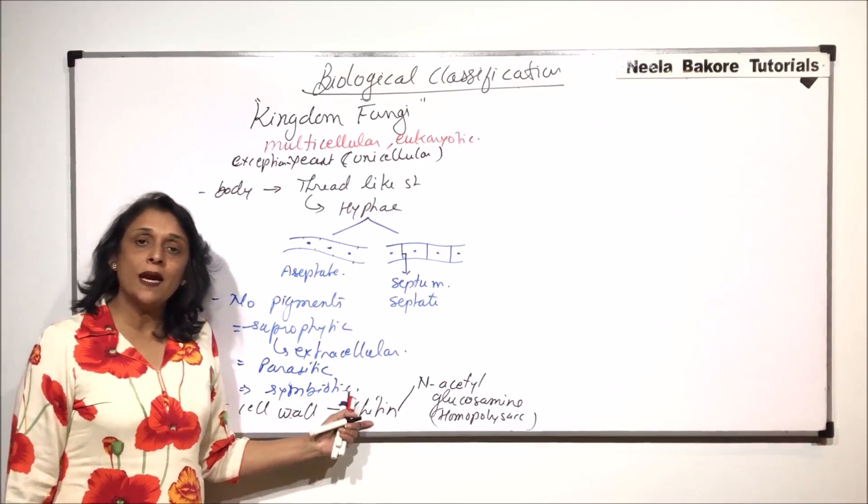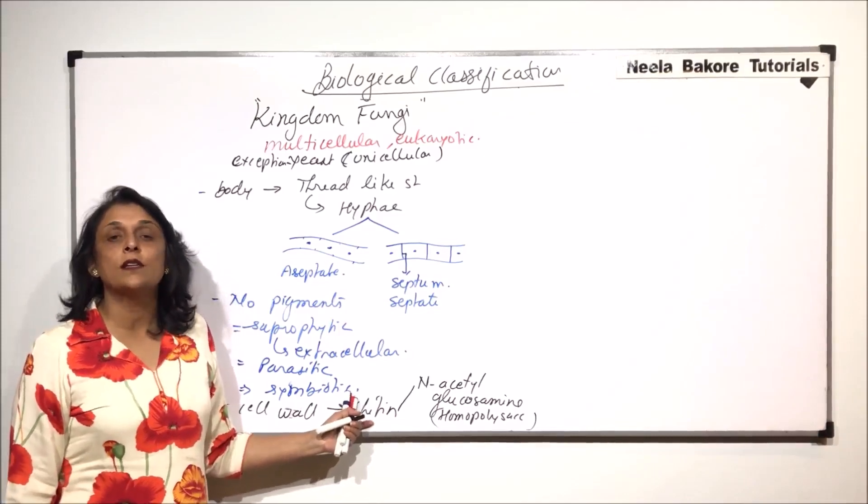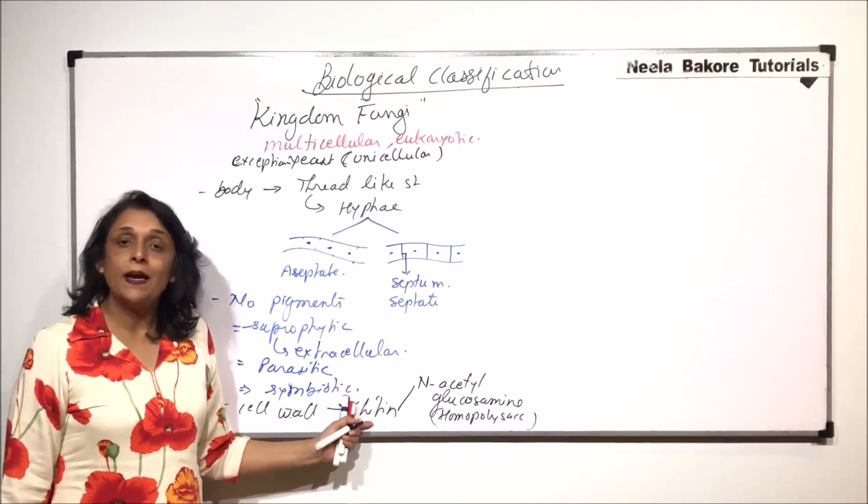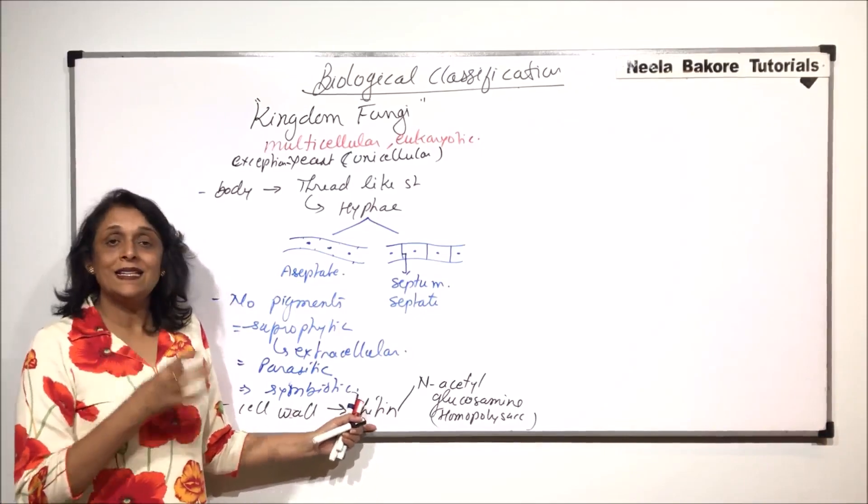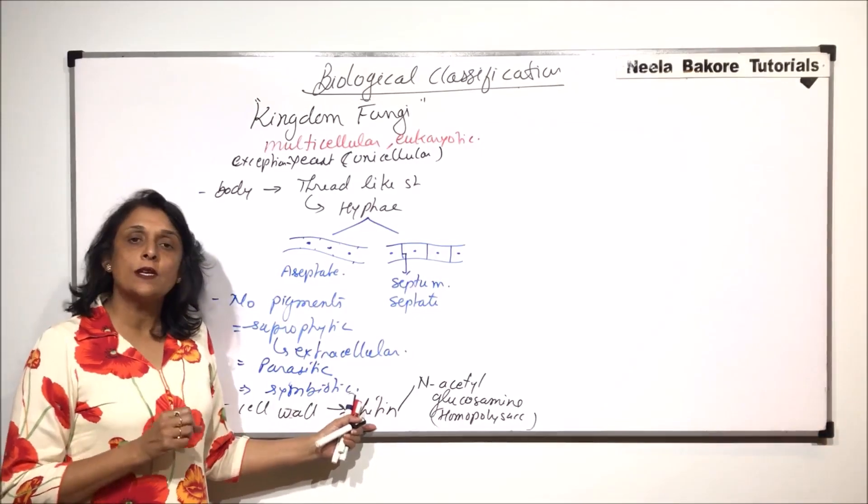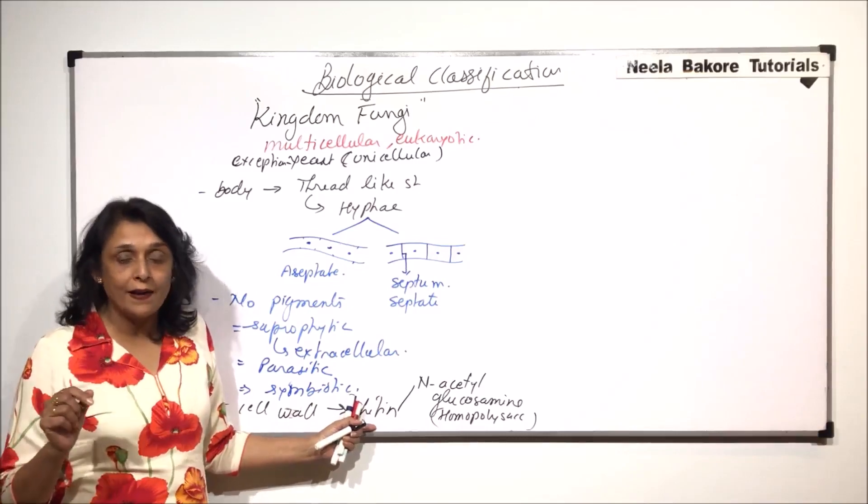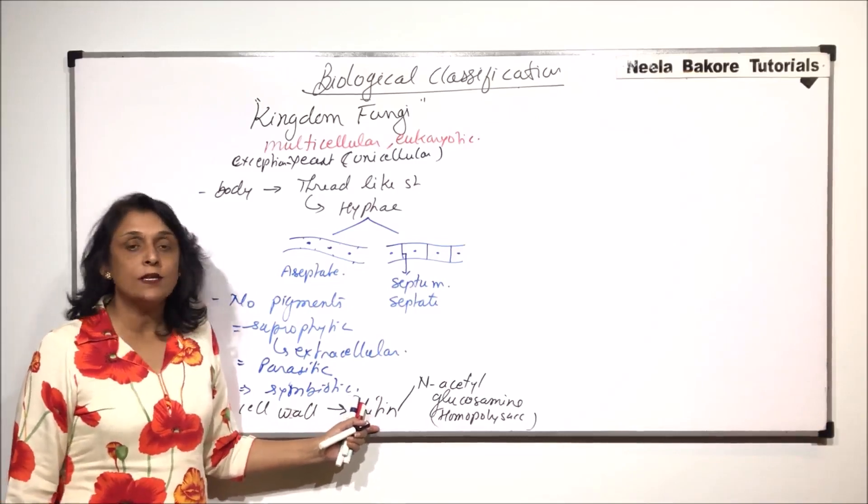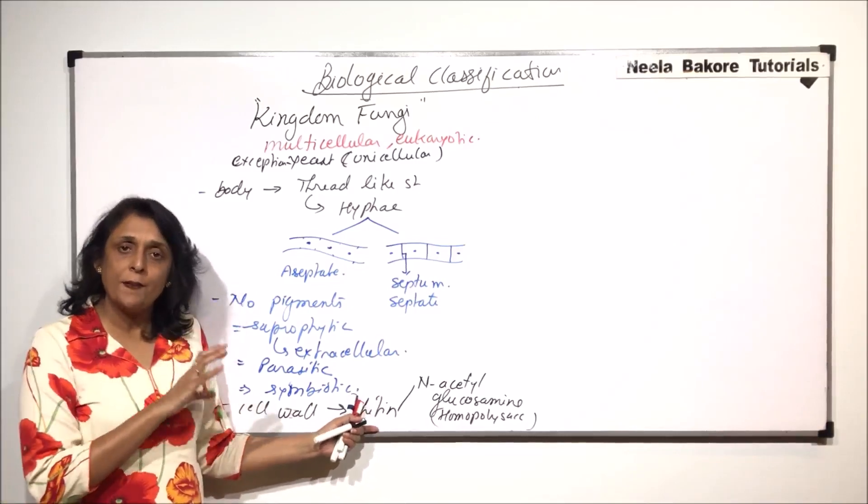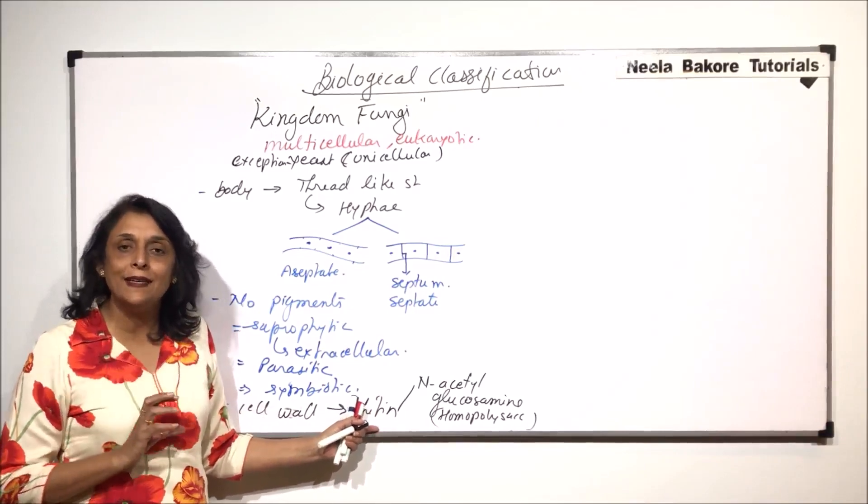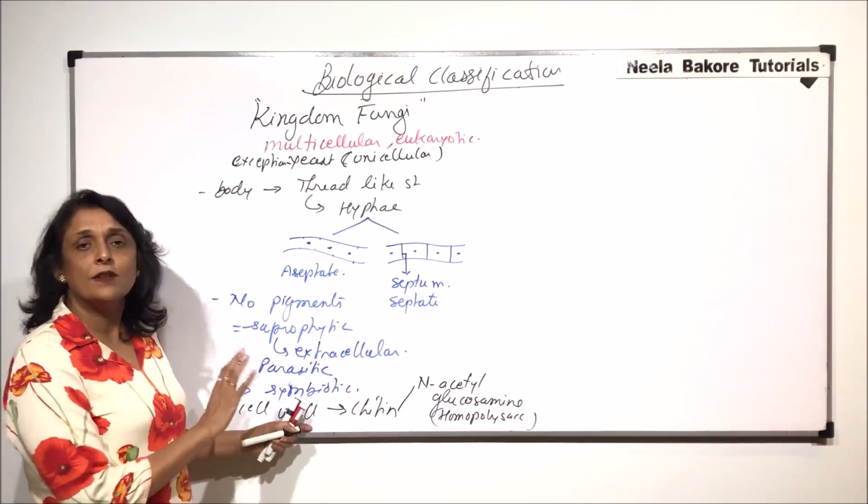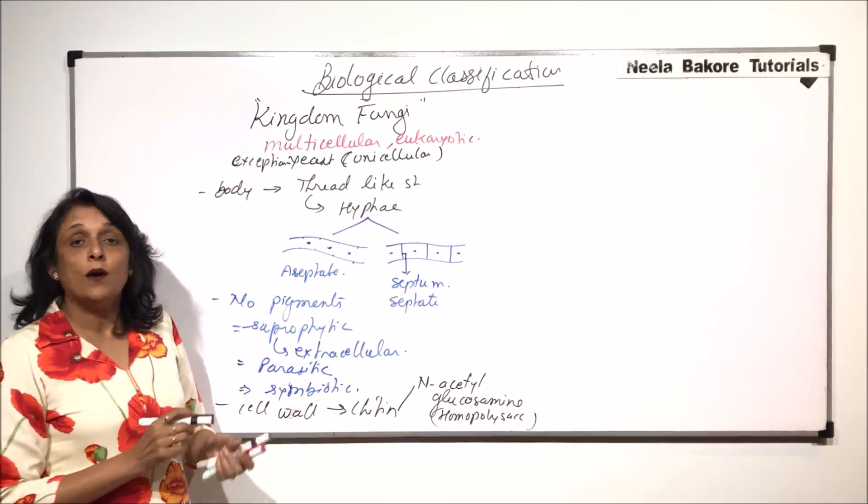Chitin is soft and leathery substance. It is the same chitin which is found in the exoskeleton of arthropods. But in arthropoda, in this chitin, calcium salts get deposited so it becomes hard. But in case of fungi, it is not hard. It remains soft and leathery layer. So just a general structure. Now coming to the classification of fungi.